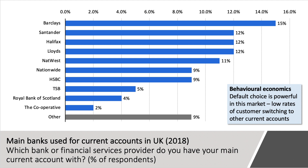Behavioural economics comes into this as well. A 2018 survey asked which bank or financial service provider people have their main current account with, and the chart shows the big banks dominate — Barclays, Santander, Halifax, Lloyds, NatWest, Nationwide. Part of this is behavioural economics at work: once people have chosen a bank and a current account, they're unlikely to switch. There's a very powerful default choice or habitual behaviour, leading to fairly low rates of switching, which helps make the market more oligopolistic because there isn't consumer churn from year to year.